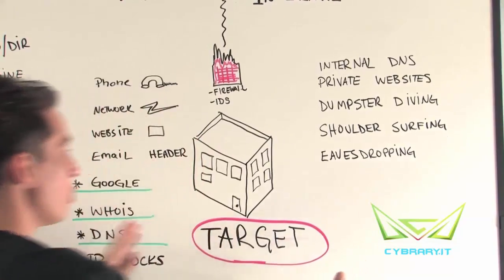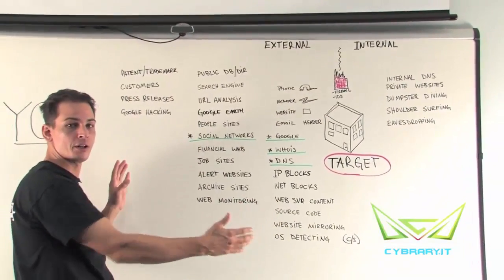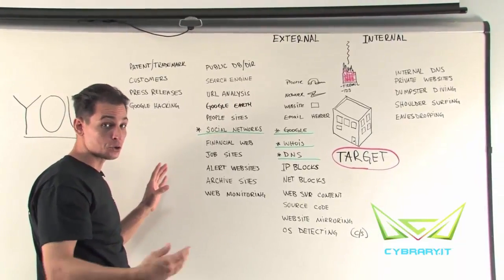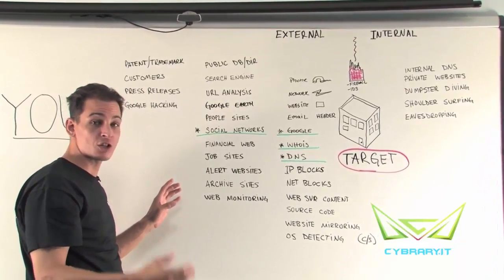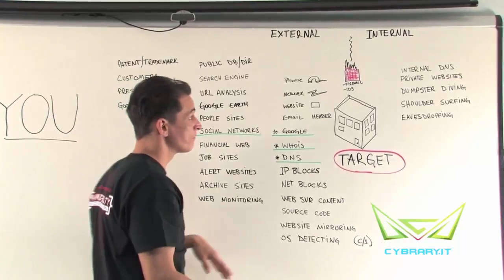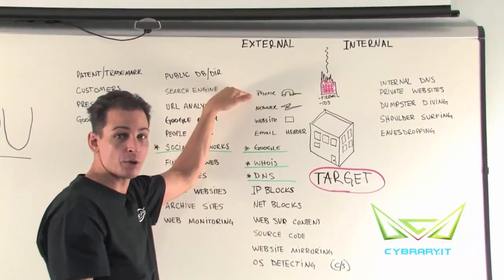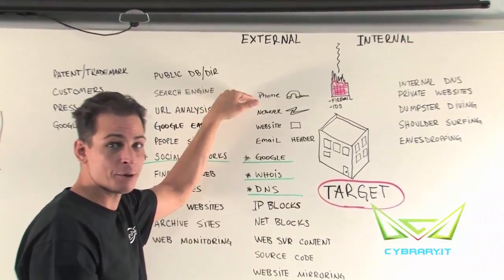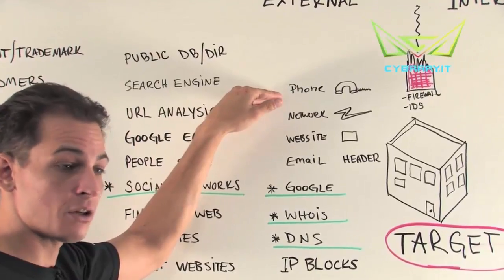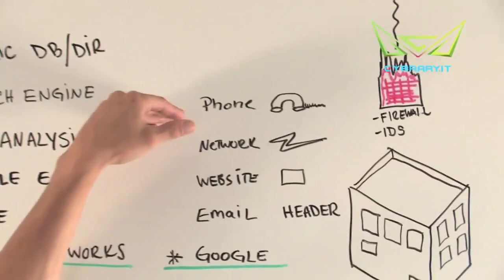But if we zoom out and look at what we can do externally over the network or over the internet, there's a lot more information we can document and use to our advantage. Some of the basic tools in our toolkit at this point include the telephone — if we can have phone numbers disclosed to us, simply call the number and start social engineering. It could be as simple as that.